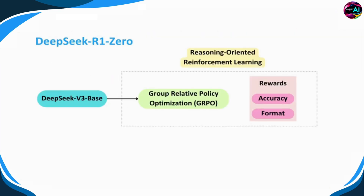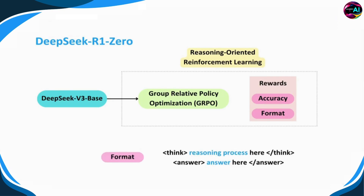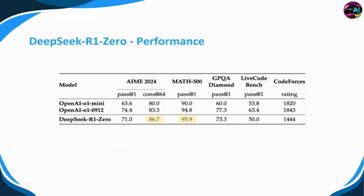Let's get back to the R1-Zero pipeline. We learned that the reinforcement learning phase uses GRPO — but how about the rewards? DeepSeek R1-Zero uses two types of rewards. One is the accuracy reward, which checks if the answer is correct, like verifying a math problem or a LeetCode solution using predefined test cases. The second is the format reward, which ensures that the model formats its reasoning by placing the thought process between think tags and enclosing the answers between answer tags.